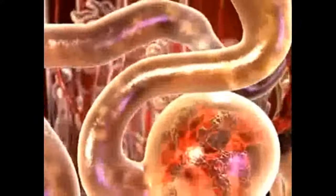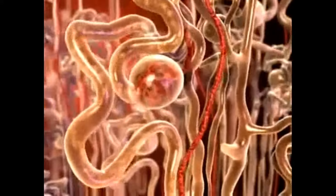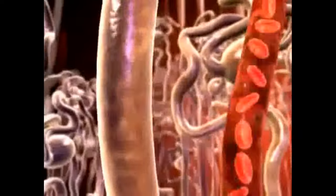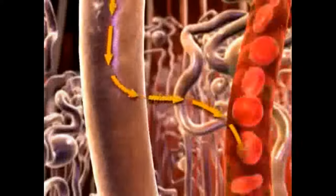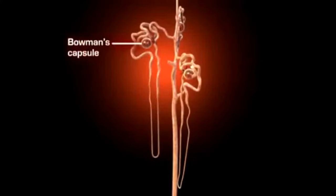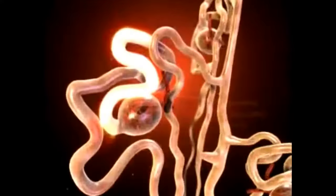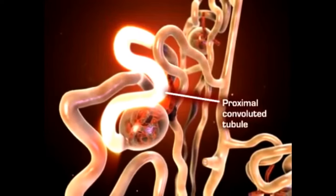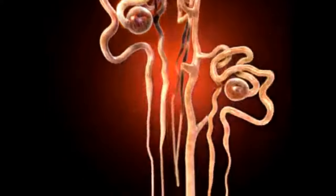The filtrate diffuses across Bowman's space and into the tubule system of the nephron. In the tubules, some substances are added to the filtrate as part of urine formation, and some substances are reabsorbed out of the filtrate and back into the blood. The nephron tubule is divided into four segments. The filtrate passes through each segment before reaching the ureter. The first is the proximal convoluted tubule, a highly coiled segment that drains Bowman's capsule, where almost complete absorption of nutritionally important substances takes place.